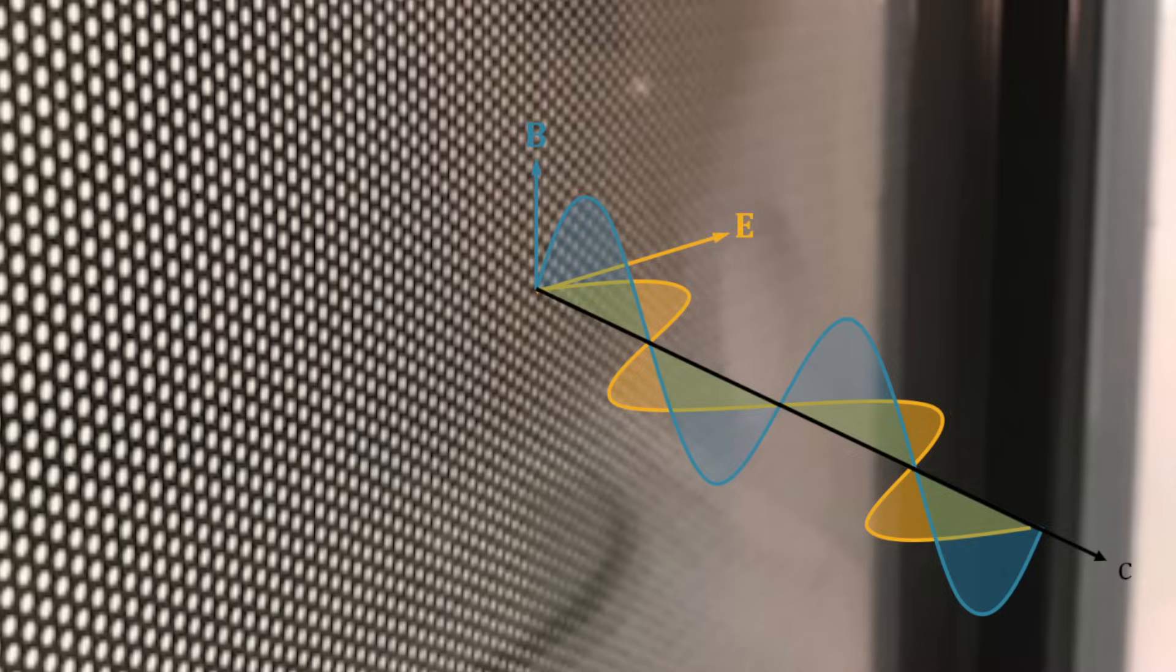This longer wavelength and larger amplitude also means that the microwave simply cannot pass through the tiny little metal mesh on the front of your microwave.